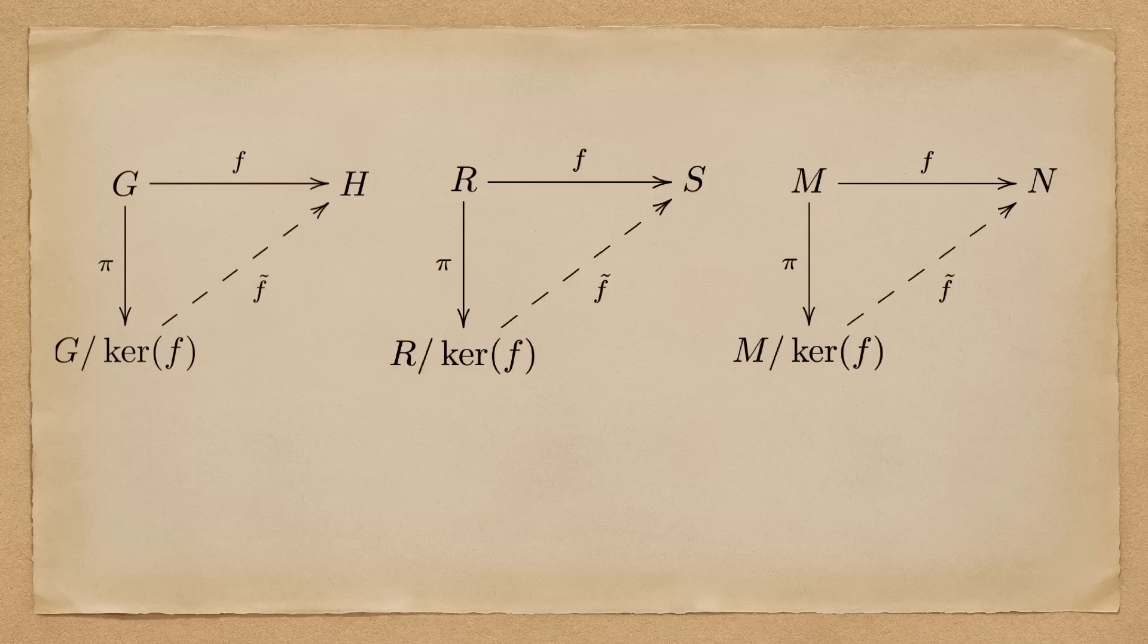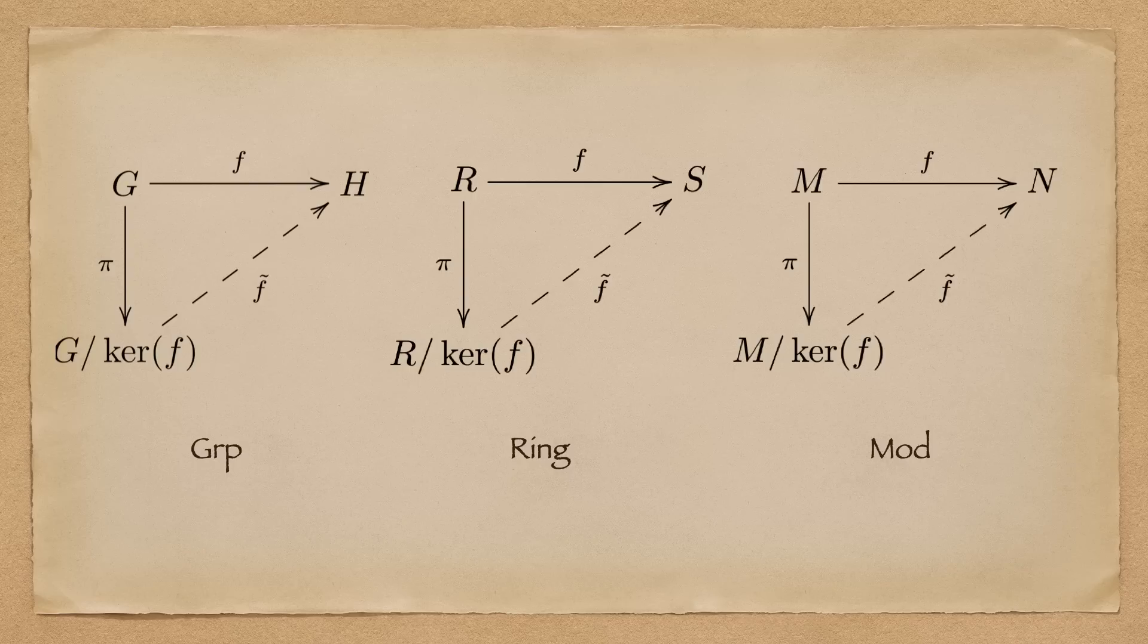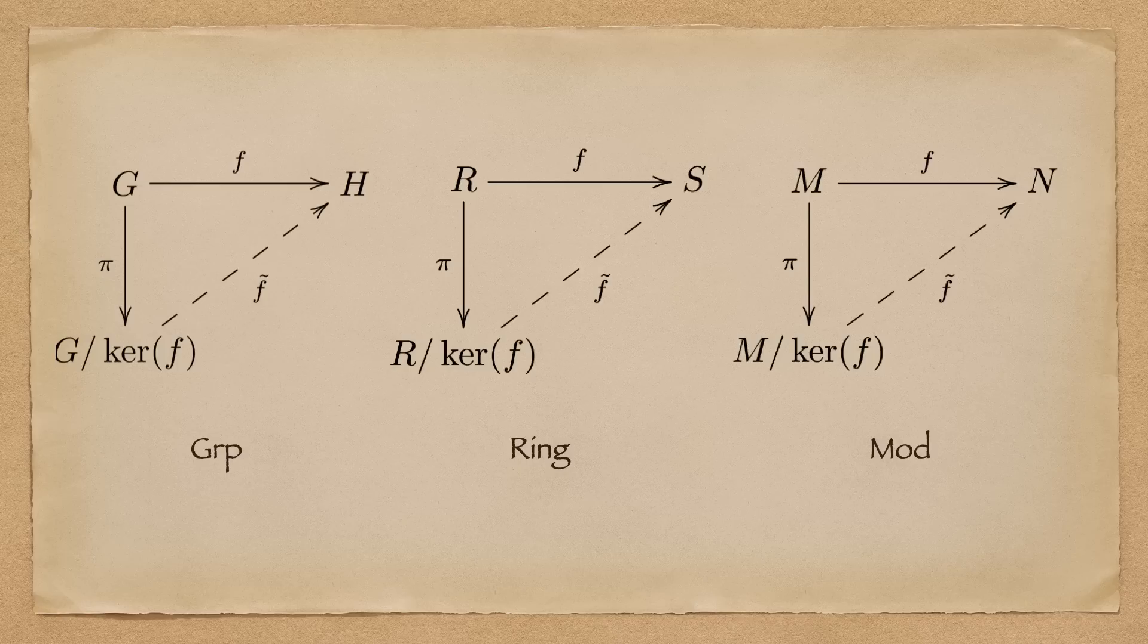What this shows is the universal property of quotients in the category group, ring, and module, respectively. But what is the universal property, and how does it relate to the first isomorphism theorem? Well, let's look at the definition.